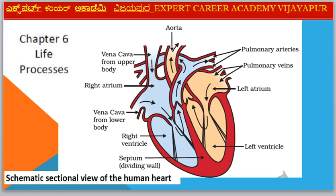Next diagram — Chapter 6: Life Processes. Diagram: Human Heart. Parts include Left Atrium, Left Ventricle, Right Ventricle, Septum, Vena Cava from lower body, Right Atrium, and upper body connections.